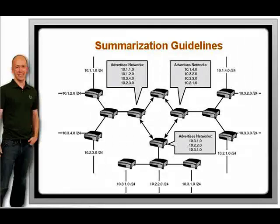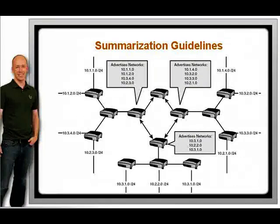The first rule is to design your networks with summarization in mind, even if you don't need it yet. This means that you will group contiguous subnets together behind the router that will summarize them. You do not want to have some subnets from a summarized group behind some other router. The summary is essentially saying, I can reach the networks represented by this summary — send any traffic for them through me. If one or more of the networks behind the summarizing router is unavailable, traffic will be dropped, but not at the summarizing router, because the summary is still valid.